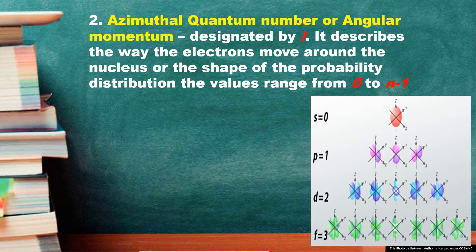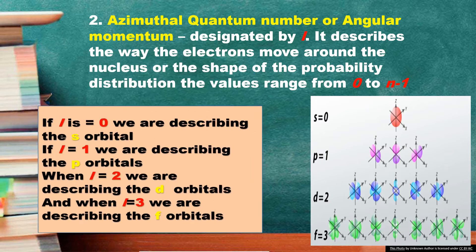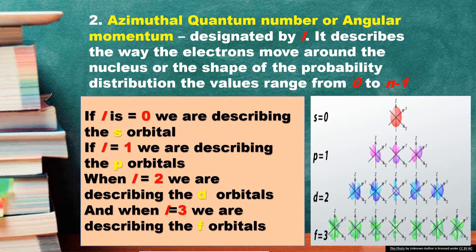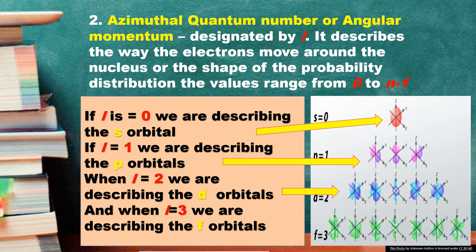For the second quantum number, the angular momentum quantum number designated by letter L: if L is 0, we are describing the S orbital. If L is equal to 1, we are describing the P orbital. If L is 2, we are describing the D orbitals. And when L is equal to 3, we are describing the F orbitals.